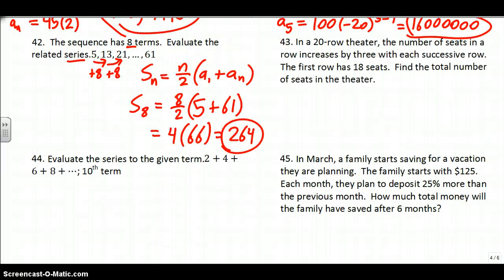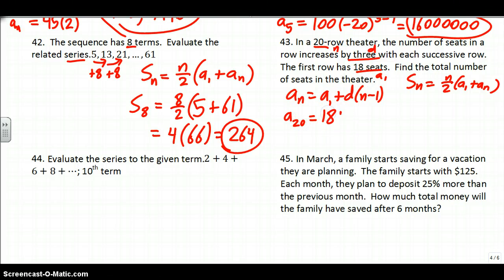43. In a 20 row theater, 20 is going to be N - that's how many rows we have. The number of seats in a row increases by three with each successive row. That's D. The first row is 18 seats - that's A1. Find the total number of seats in the theater. The only thing we're missing for our series formula is the last term. We need to know how many seats are in that 20th row. We have to use the arithmetic sequence: the first term plus your common difference times N minus 1. I know there are 18 seats in the first row, every row increases by 3. It will be 18 plus 3 times 19. If I do 3 times 19, add 18 to it, you get 75. So that means there are 75 seats in the last row.